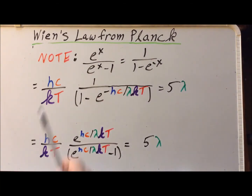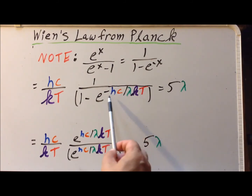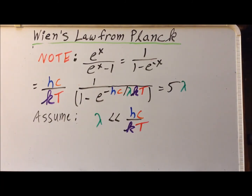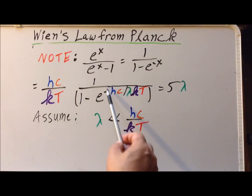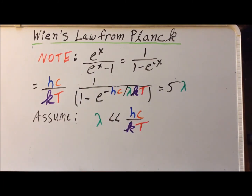Applying this identity, we get Hc over kT times one over one minus e to the minus Hc over lambda kT, equal to five times lambda. Now we assume we are in the region of short wavelengths, where lambda is much less than Hc divided by kT. In this case, the exponential e to the negative infinity approaches zero, making the entire term equal to one.